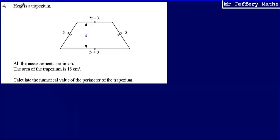This is question 4. Here we're given a trapezium. The slanted sides are 5, the height is 4, and the parallel lengths are 2x minus 3 and 2x plus 3.